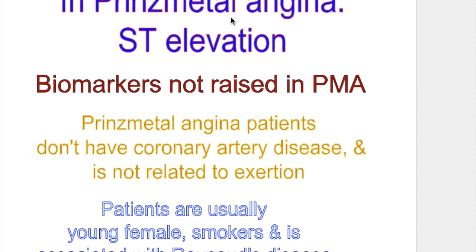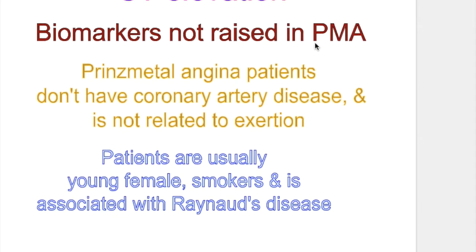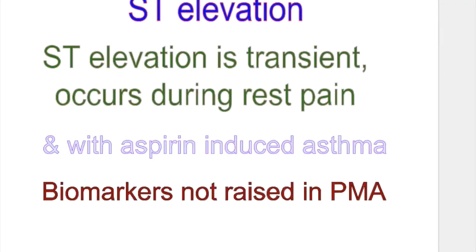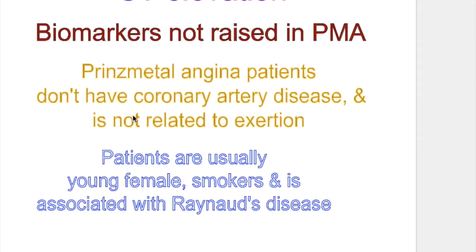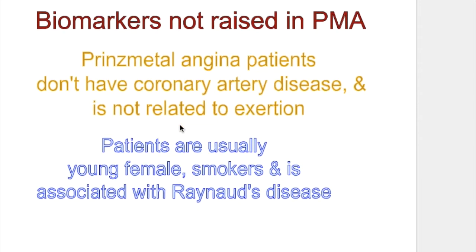The disorder from which we differentiate transmural infarct is Prinzmetal angina, because in Prinzmetal angina ST elevation also occurs. Key differences: biomarkers are not raised in Prinzmetal angina but are raised in transmural infarct. ST elevation in Prinzmetal angina is transient and occurs only during rest pain. Prinzmetal angina patients do not have coronary artery disease and it is not related to exertion, whereas transmural infarct involves coronary artery disease, atherosclerosis, and thrombosis.